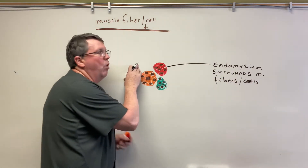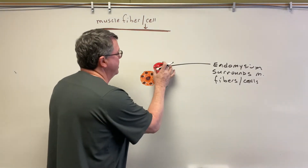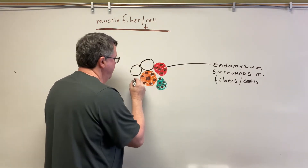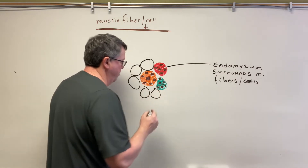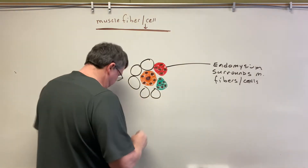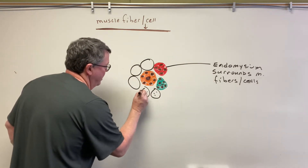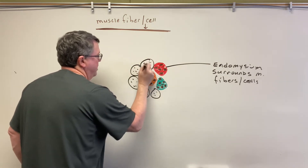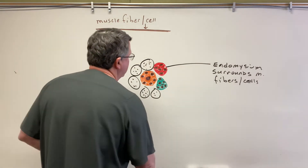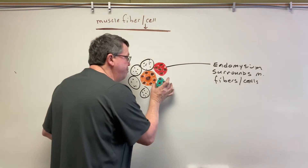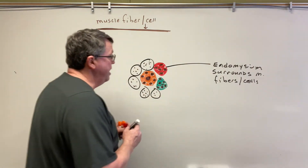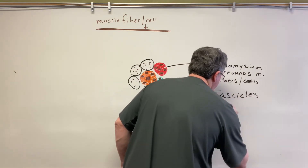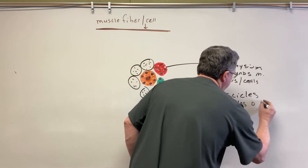Now what I'm going to do is duplicate these — so we have bundles of muscle fibers. These bundles of cells have a name: they are called fascicles. Fascicles are bundles of muscle fibers.